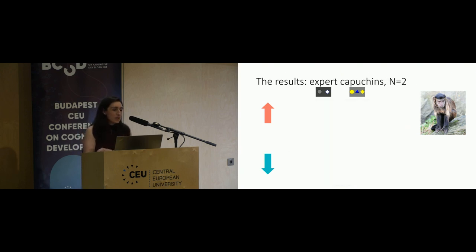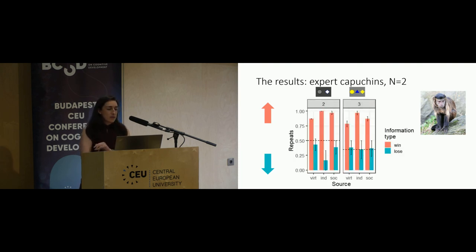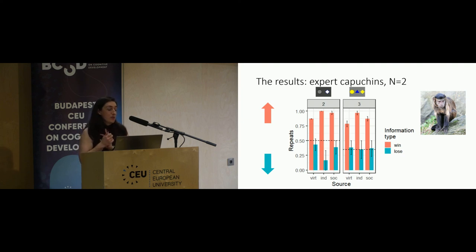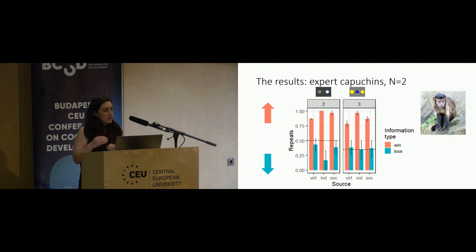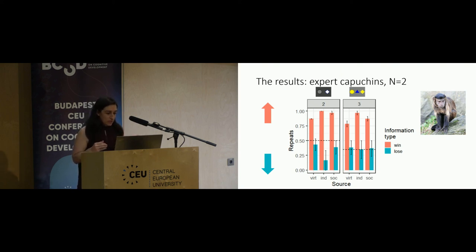The expert capuchins showed something very different. They were really good at repeating after a win, and there was actually no difference in how they treated information from the three various sources—virtual, individual, or social. So expert capuchins could successfully use all three types of information equivalently.